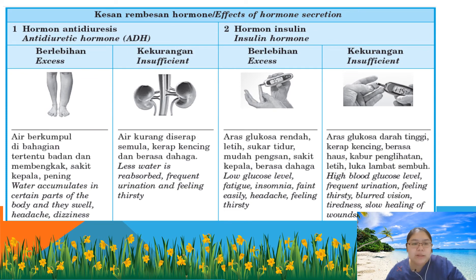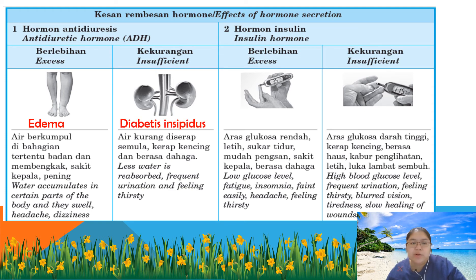When water accumulates in a certain part of the body causing swelling and headache, that disease is called oedema. Number two involves insufficient ADH — less water is absorbed, causing frequent urination and feeling thirsty. This disease is called diabetes insipidus, which is different from diabetes mellitus. With less ADH, less water is absorbed, leading to thirst.